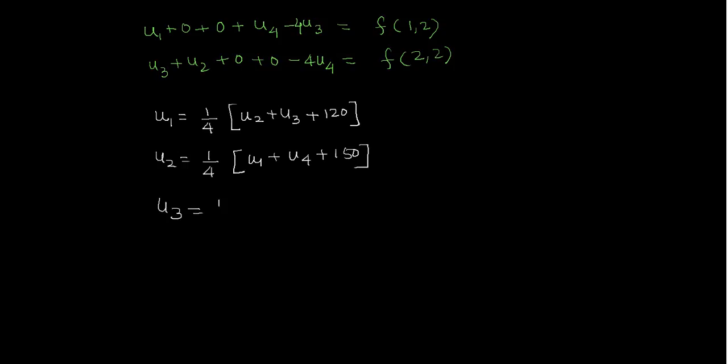u3 equals 1/4 times (u1 + u4 + 150), and u4 equals 1/4 times (u2 + u3 + 180). So see, these two are same.